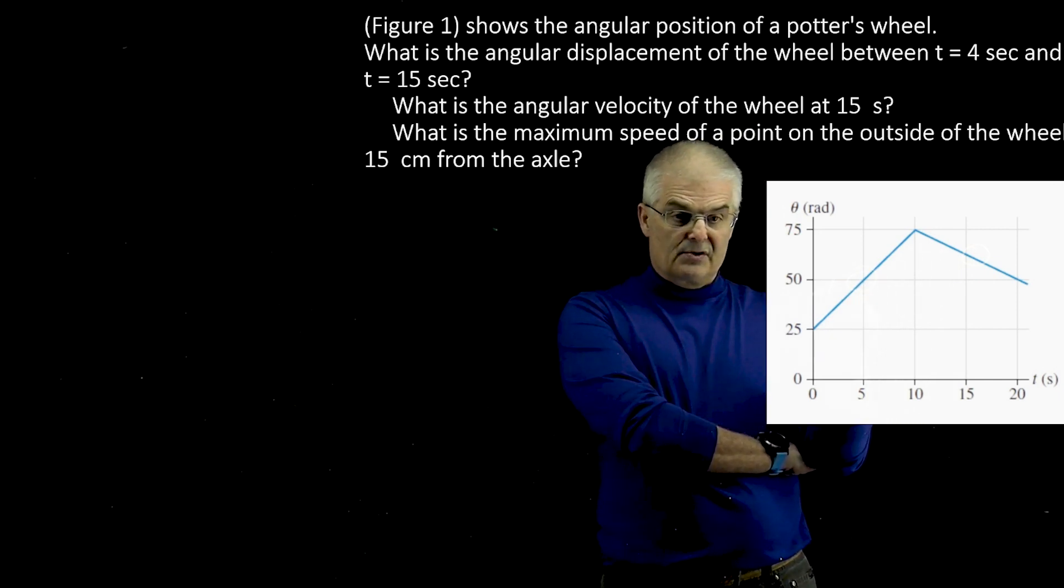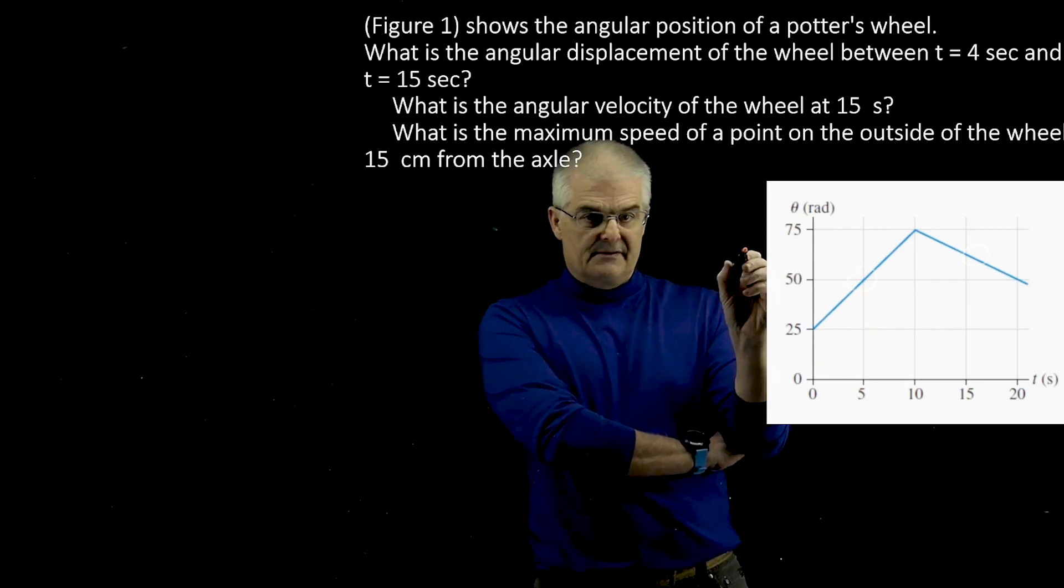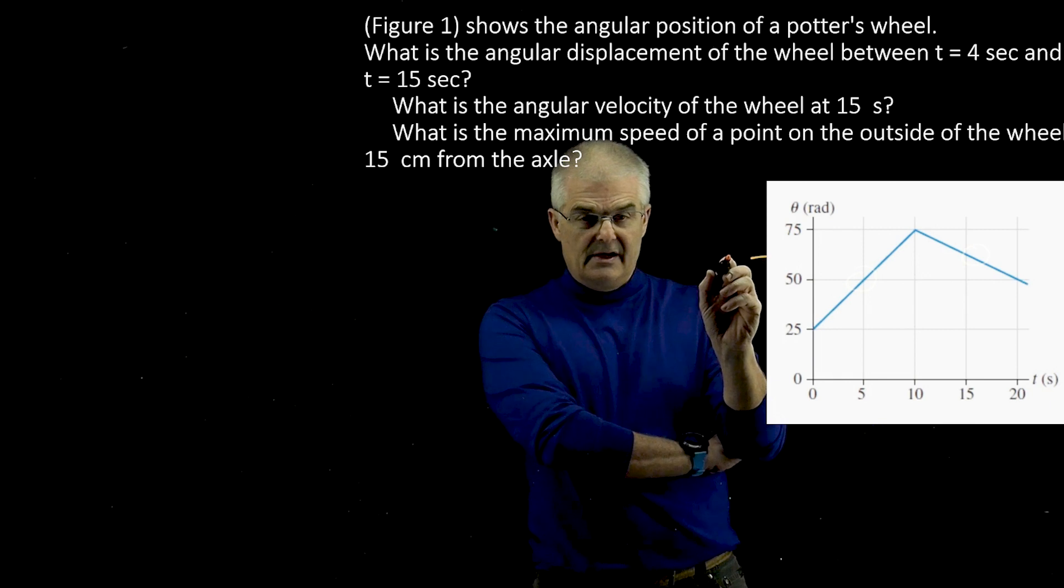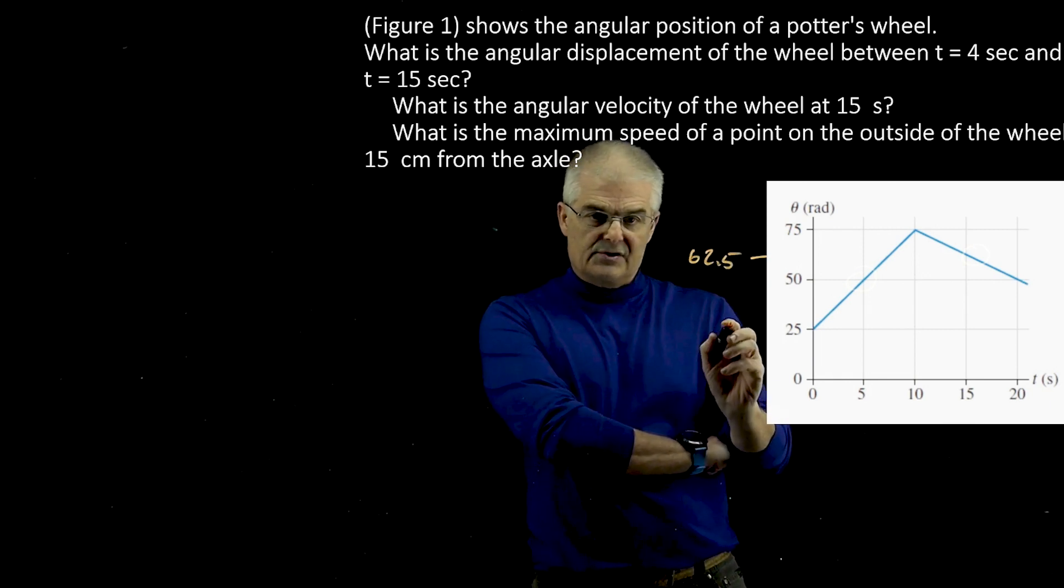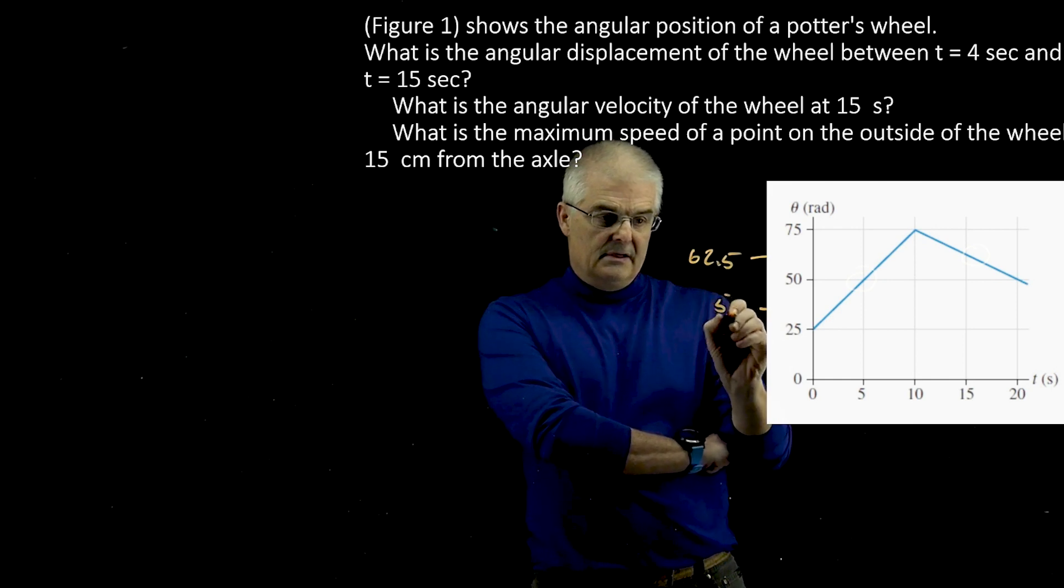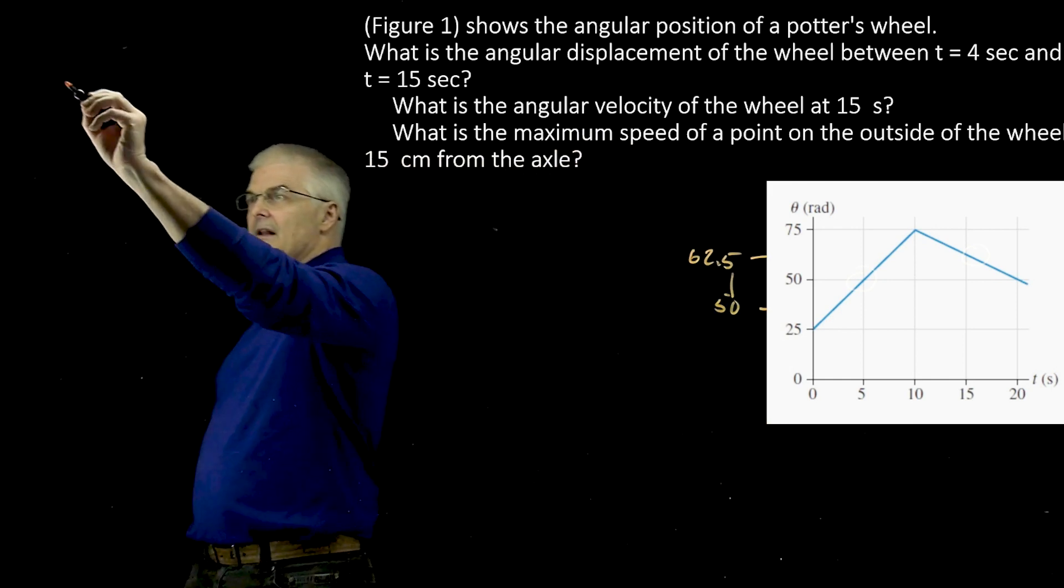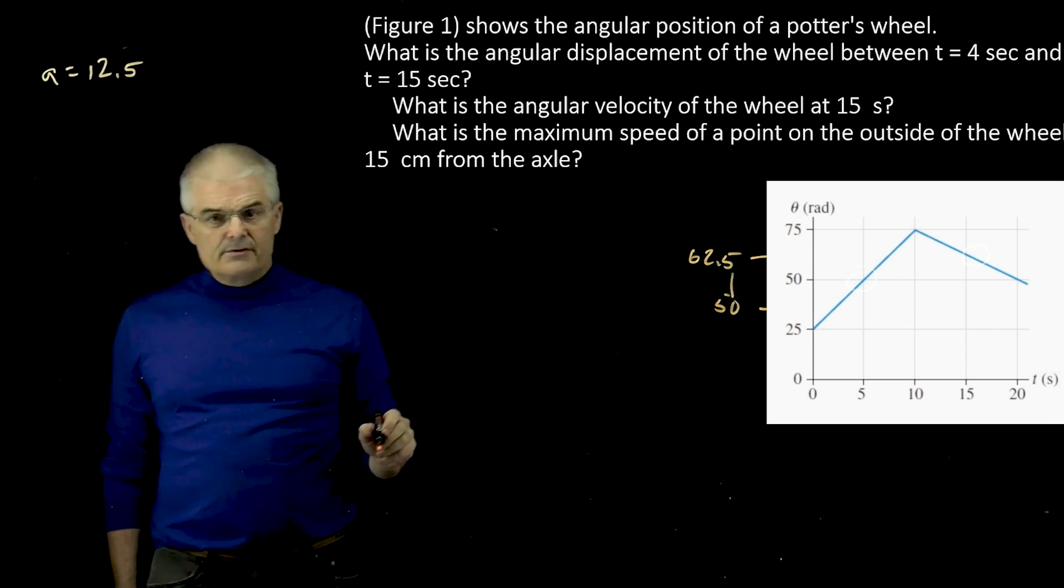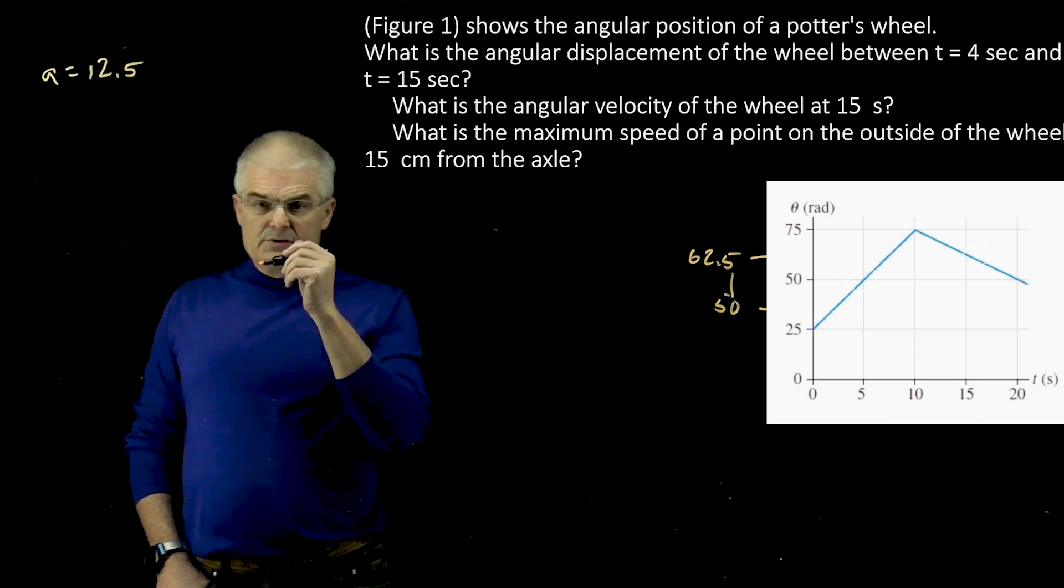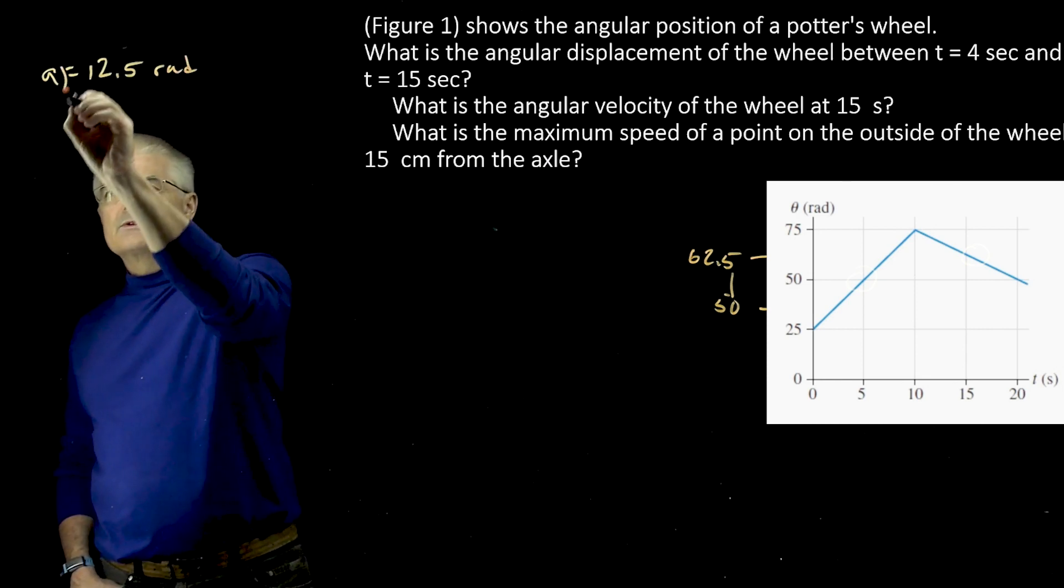Remember, displacement is not distance. So it starts at 50, and it goes to halfway between 50 and 75. So I would call that 12 and a half, it would be 62.5, and it's starting at 50. So the gap is, so the answer to, if you will, A, is 12.5 meters? No, this would be radians, 12.5 radians. Okay, that's the answer to A.